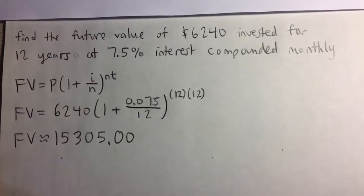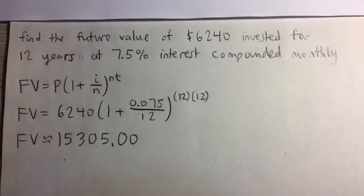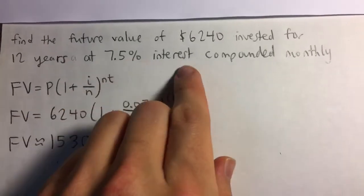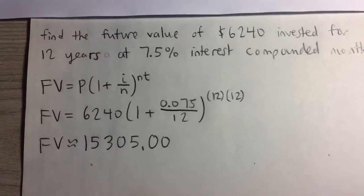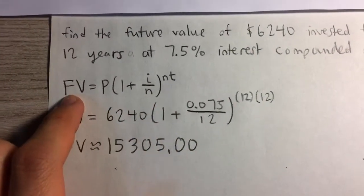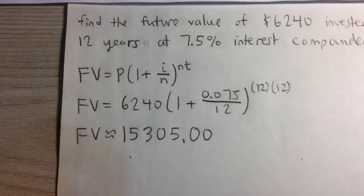Find the future value of $6,240 invested for 12 years at 7.5% interest compounded monthly. Here's the formula for compound interest, the future value of money invested in compound interest.